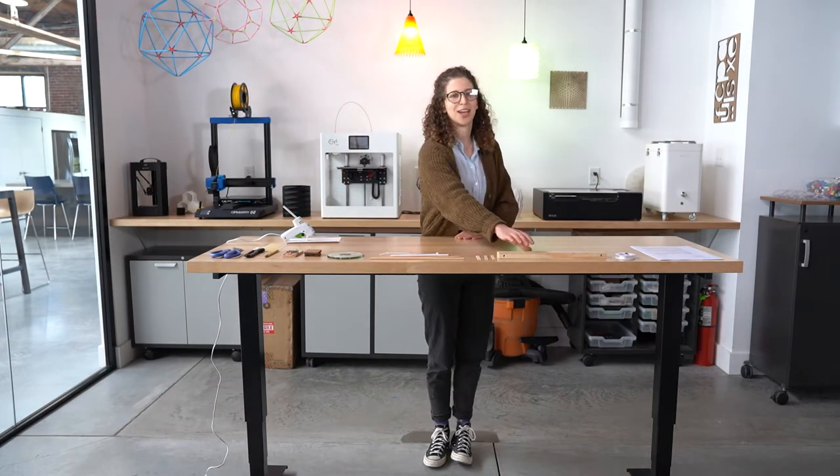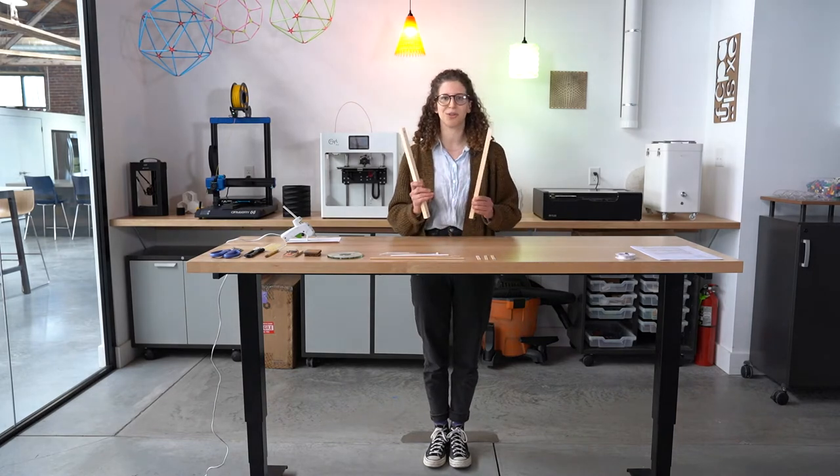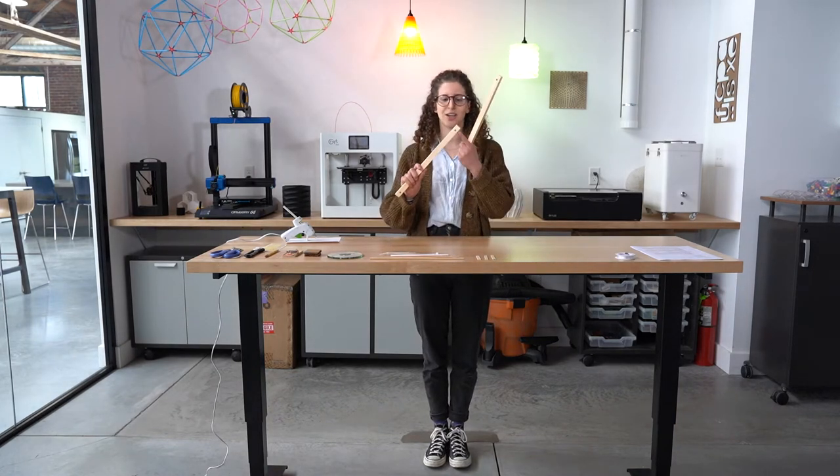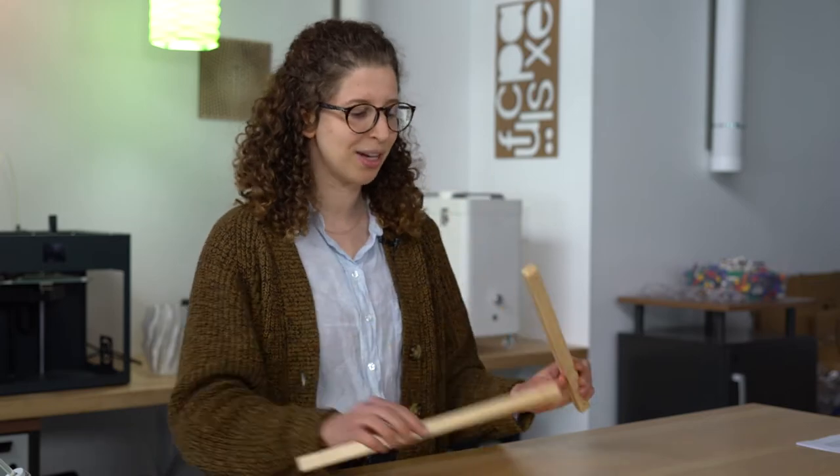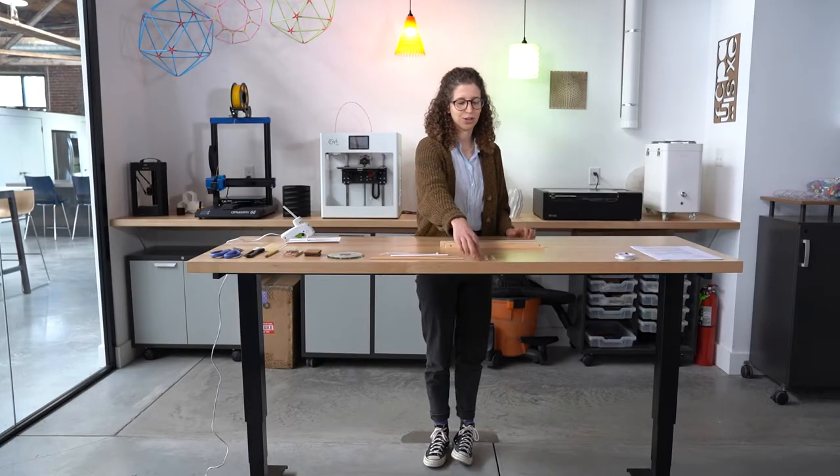So we're going to start by making the frame of our car. The frame is going to be made up of these two pieces of wood which I already drilled holes in on either end in both of them. And we're also going to use these three popsicle sticks. I already cut them. They're not exactly the same length but they're approximately three inches.